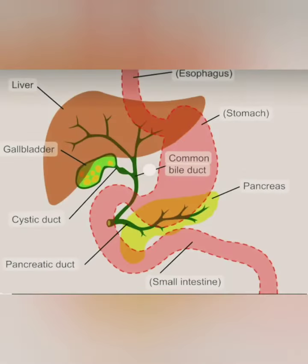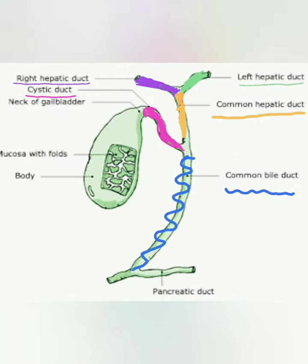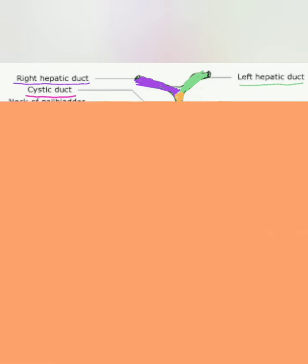Before that, we see the normal anatomy of the liver. The right and left hepatic ducts join and make the common hepatic duct. It will join the cystic duct and make the common bile duct, and the common bile duct joins the pancreatic duct.